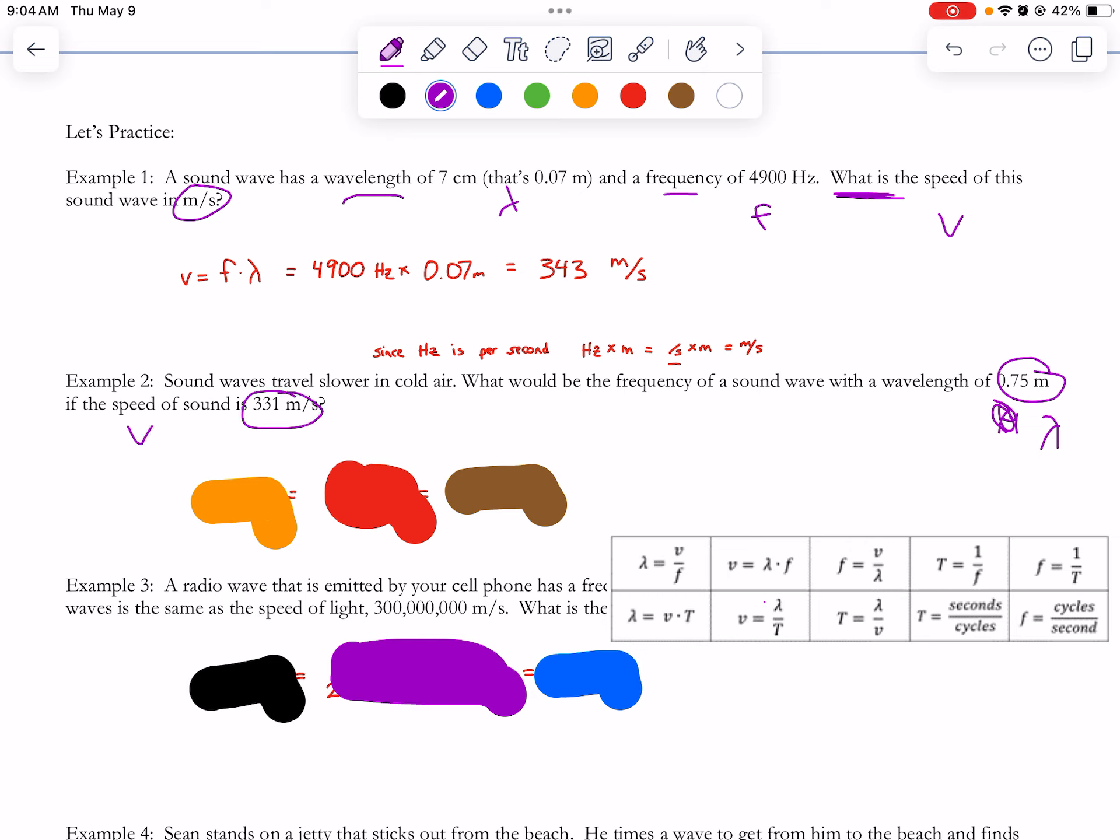I have v and lambda that I'm going to be using. I can actually find this or this, because they both have v and lambda. But it says what is the frequency, so I should definitely use the one that says f equals, because that one will give me frequency.